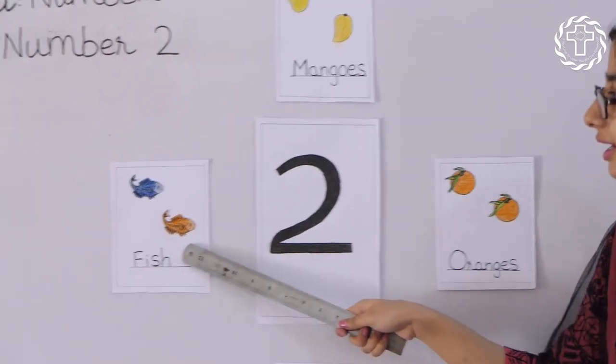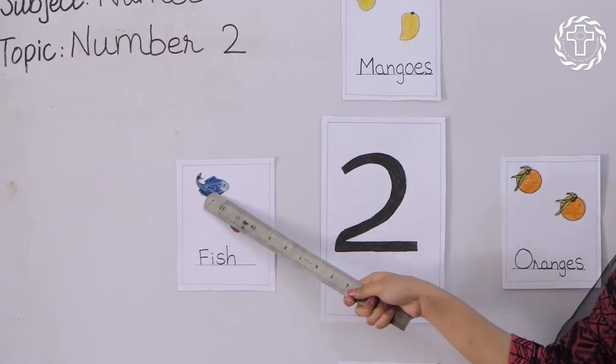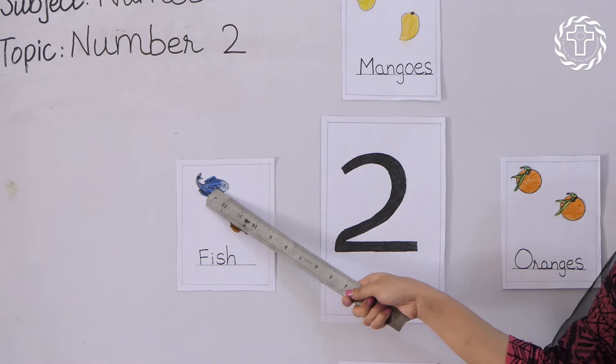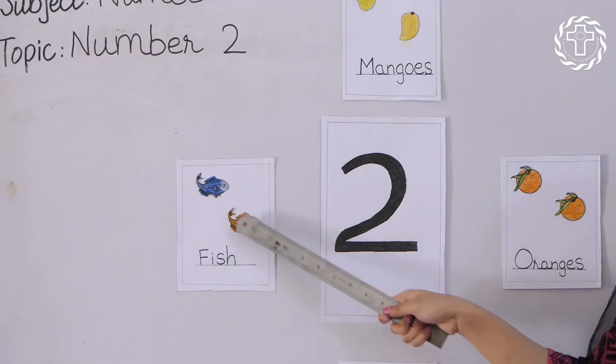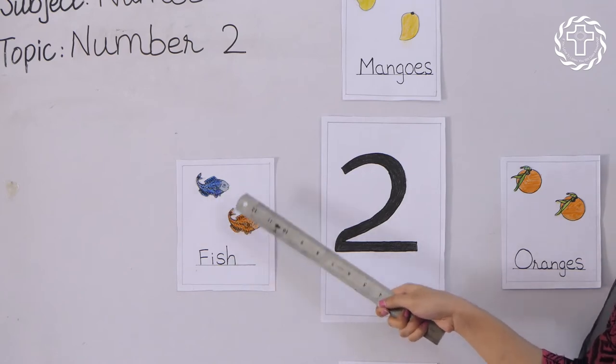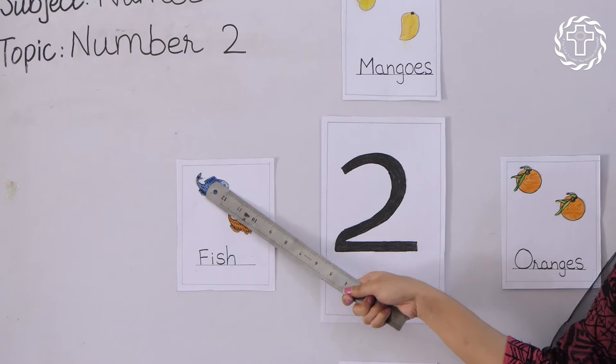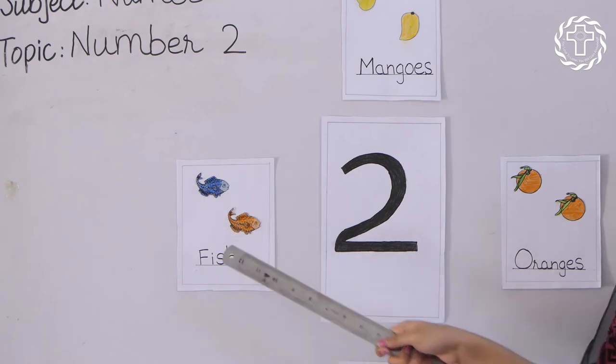Look at this picture. How many fish are here? One, two. How many fish are here? One, two.